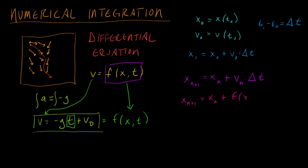x_(n+1) equals x_n plus F(x_n, t_n) times delta t. So all I'm doing is substituting this V for this F right here. We're seeing a more general way of solving differential equations numerically.